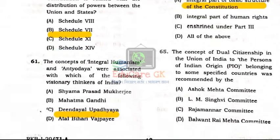Question Number 65: The concept of dual citizenship in the Union of India — for persons of Indian origin (PIO) belonging to some specified countries — was recommended by which committee? Option B: L.M. Singhvi Committee.